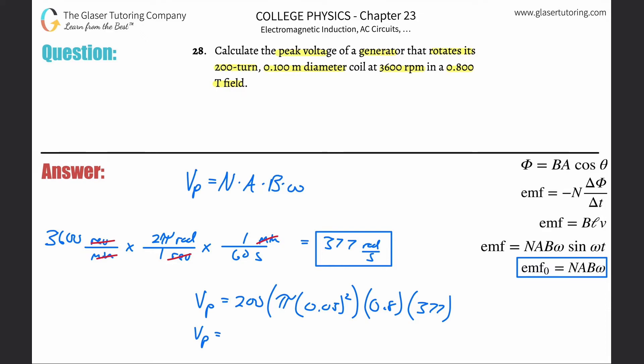Into the calculator: 200 times π times 0.05 squared times 0.8 times 377. This gives 473.7, so about 474 volts.